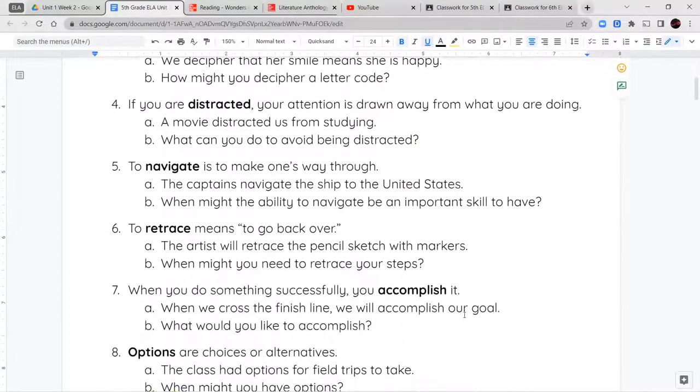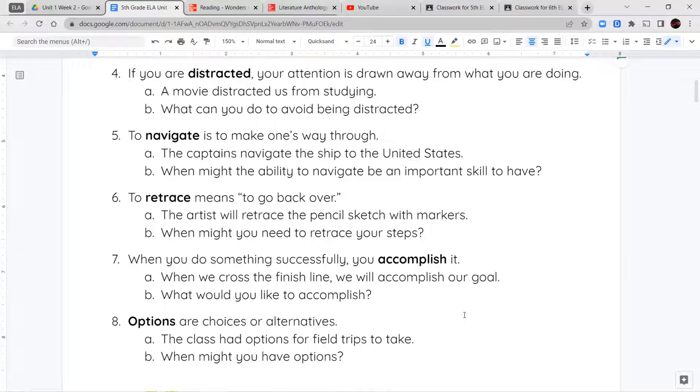Your fourth word is distracted. When your attention is pulled away from what you're doing, you get distracted. So a movie distracted us from studying. What can you do to avoid being distracted? If you're reading something and someone comes running through the room, your attention is drawn to that person. So you are distracted from your reading.